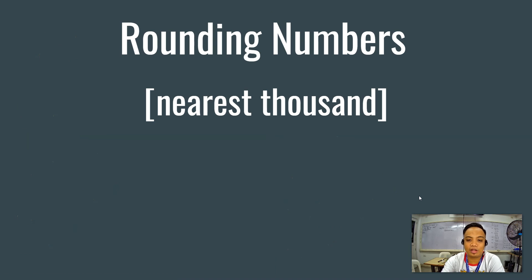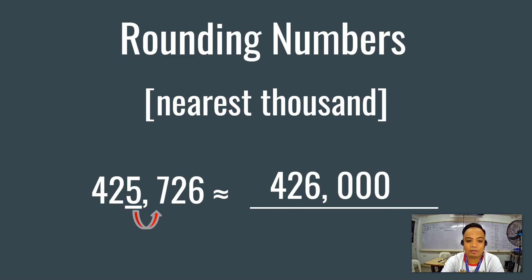Let's start now with the nearest thousand. We have here 425,726. As you can see, we underlined the digit in the thousandth place. And what is the preceded number? It's 7. Now, should we round this down or should we round this up? You're correct. When we round this number to the nearest thousand, the number is 426,000.